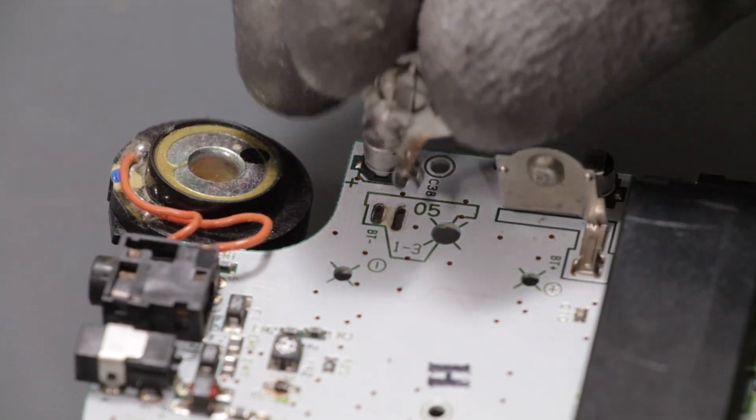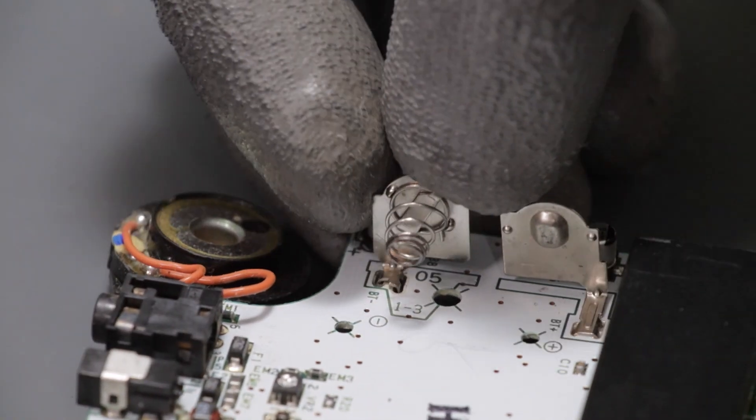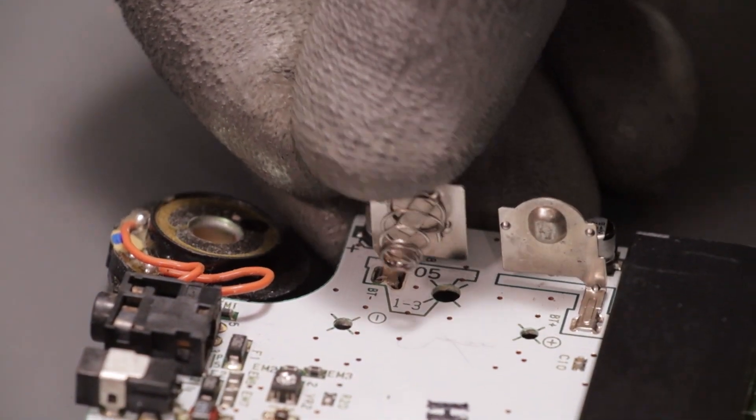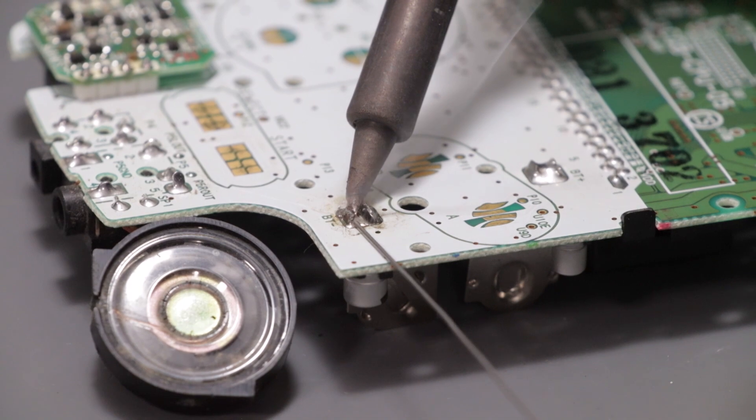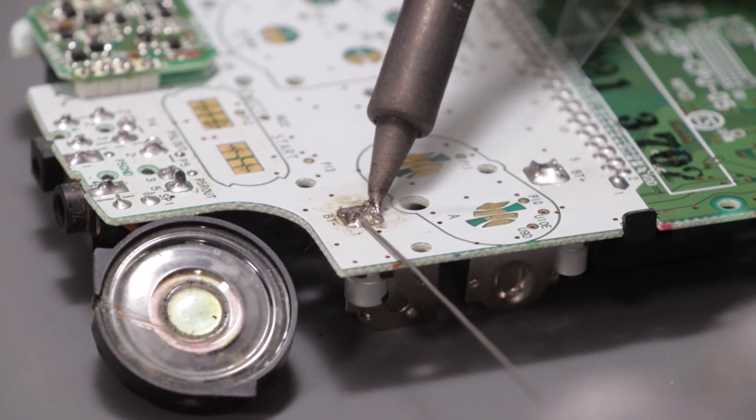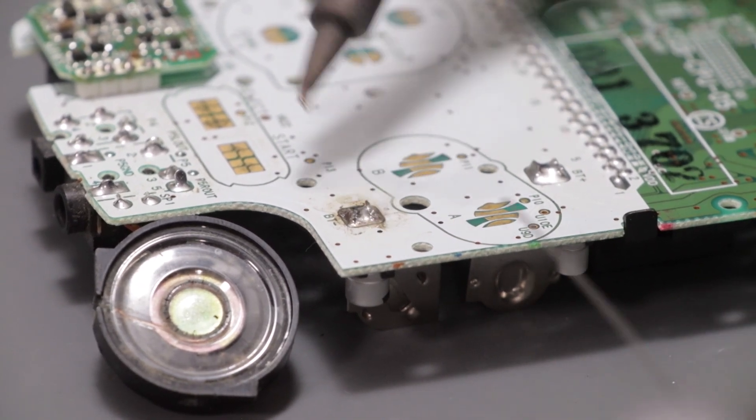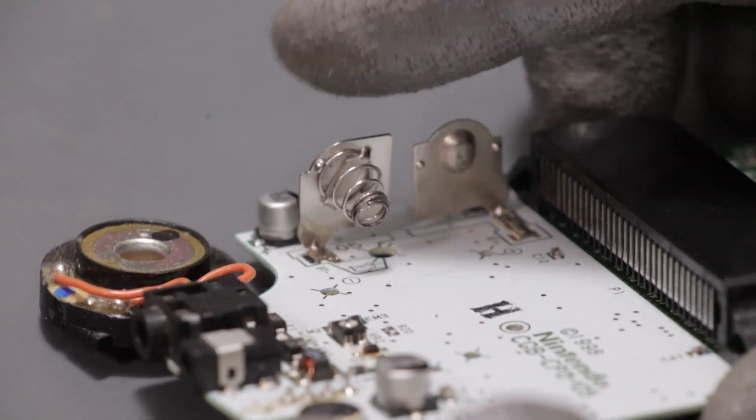I put the clean battery connector back in its spot and make sure it's seated correctly. Then I flip the board over and re-solder it back into place. And I like to give it a wiggle to make sure it's not going anywhere.